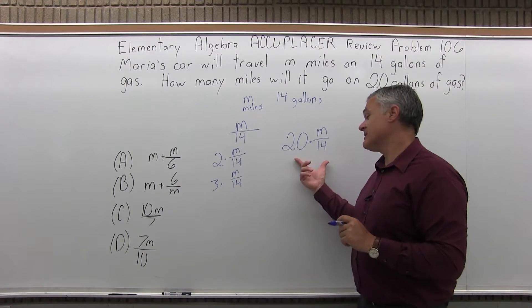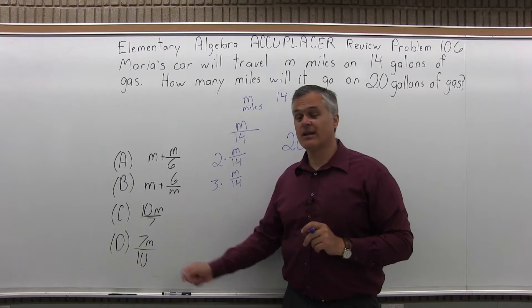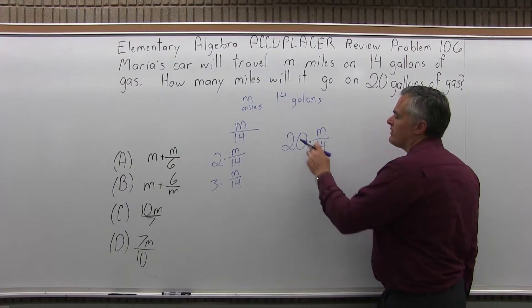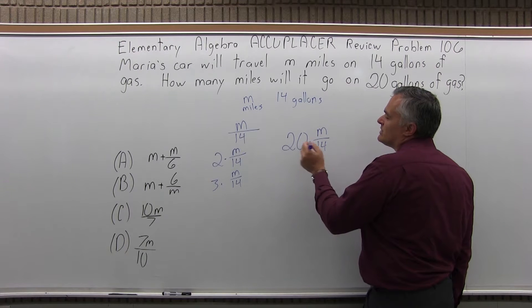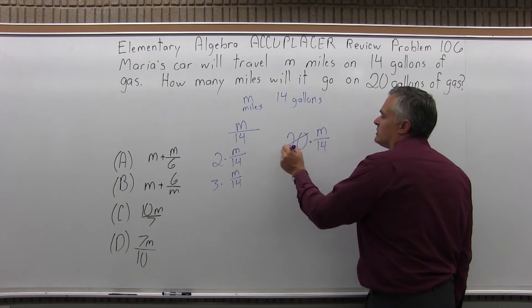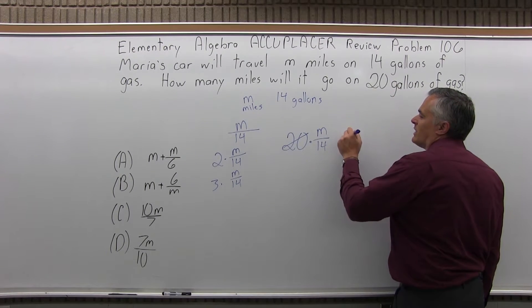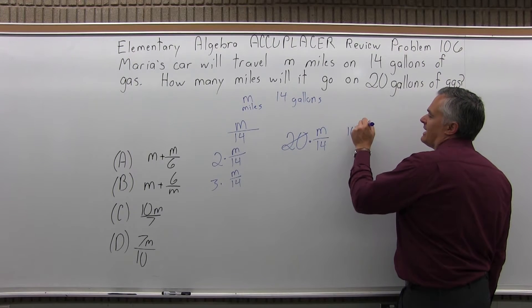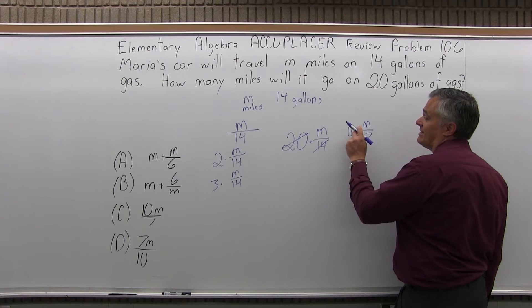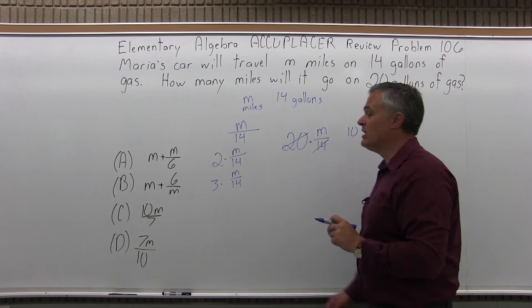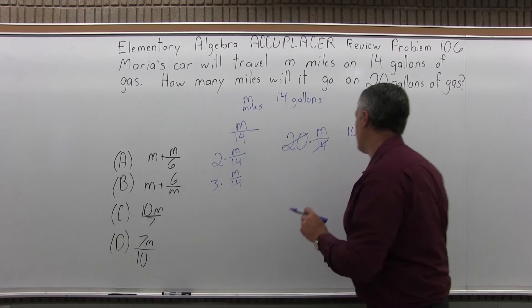And we can simplify this. Notice I claim that's the answer and it doesn't look like any of the options that are given. But the 20 and the 14 are both even. So let me reduce at least by two. Two goes into 20 ten times. And I'd have M over half of 14 is seven. Ten times M over seven, which can be written as ten M over seven.